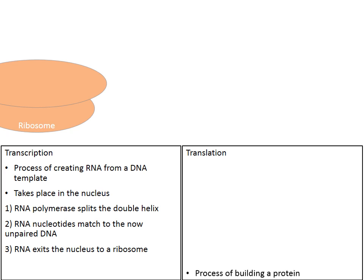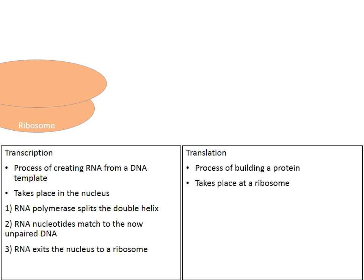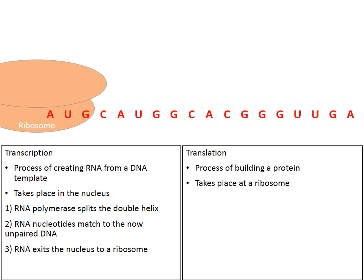Translation is the process of building a protein and it takes place at the ribosome. Here comes the messenger RNA created during transcription — it exited the nucleus and is coming to a ribosome. The ribosome reads one codon at a time. Notice how the letters AUG are flashing. AUG is a codon — three consecutive RNA nucleotides. AUG is a special codon called a start codon; it's the sequence that begins the process of translation.